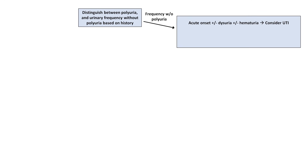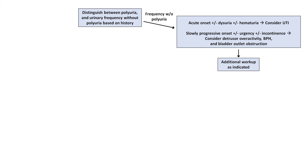The diagnostic algorithm starts with determining from history whether the patient has true polyuria or frequency without polyuria. If they have frequency without polyuria and it is of acute onset with or without dysuria and/or hematuria, consider a UTI. If the frequency is of slowly progressive onset with or without urinary urgency and/or incontinence, consider detrusor overactivity, BPH, and bladder outlet obstruction. But if the patient has true polyuria, the most obvious next question is: are they on a diuretic?